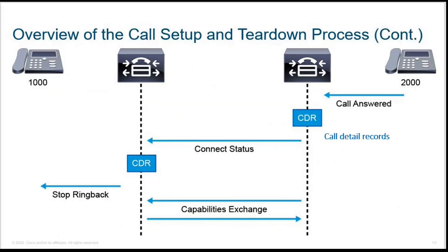Then once the call is being answered, a Call Detail Record starts at the same time. This keeps a track of the calls like the time, the number of packets, delay, and so on, and a connect status is sent back to the initiator. CDR is used in this process for the call details.